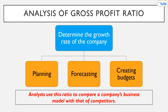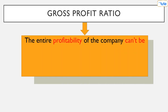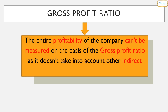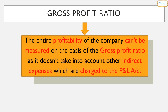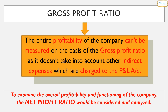Analysts also use this ratio to compare a company's business model with that of competitors. However, on the basis of GP ratio alone, the entire profitability of the company cannot be measured, as it doesn't take into account other indirect expenses charged to the profit and loss account. So to examine the overall profitability and functioning of the company, the net profit ratio would be considered and analyzed.